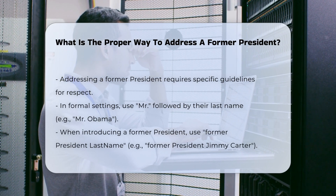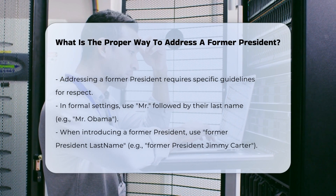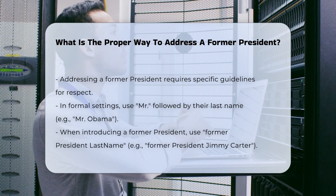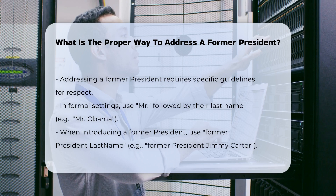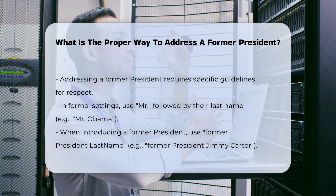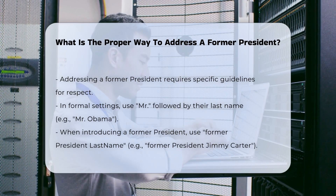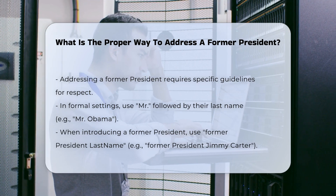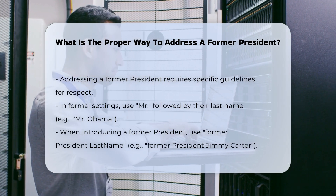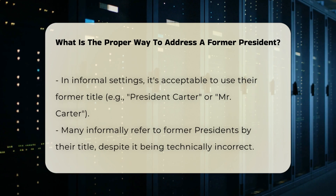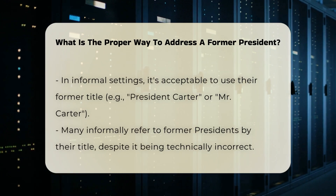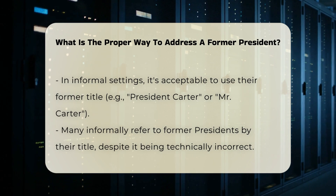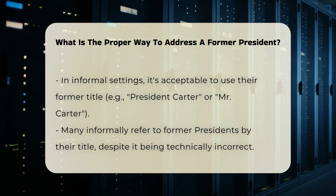Formal settings: In formal settings, the correct way to address a former president is to use the title Mr. followed by their last name. For example, you would address former President Barack Obama as Mr. Obama. When introducing a former president or referring to them in a third-party context, it is appropriate to say former president, last name — for instance, former President Jimmy Carter.